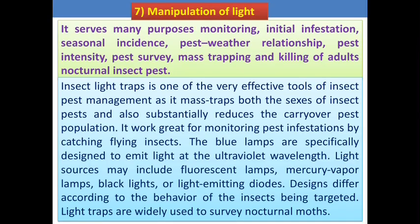The next is manipulation of light. In the last lecture we saw the light trap, which is one of the best examples of light manipulation. It serves many purposes: monitoring initial infestation, seasonal incidence, pest–weather relationship, pest intensity, pest survey, mass trapping, and killing the adults of nocturnal insect pests. With the help of these purposes or techniques, we can reduce the pest population in our field.